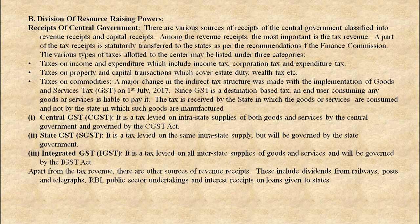Taxes on property and capital transactions cover estate duty, wealth tax, etc. Taxes on commodities: a major change in the indirect tax structure was made with the implementation of Goods and Services Tax (GST) on 1st July 2017. Since GST is a destination-based tax, an end user consuming any goods or services is liable to pay it. The tax is received by the state in which the goods or services are consumed, and not by the state in which such goods are manufactured.